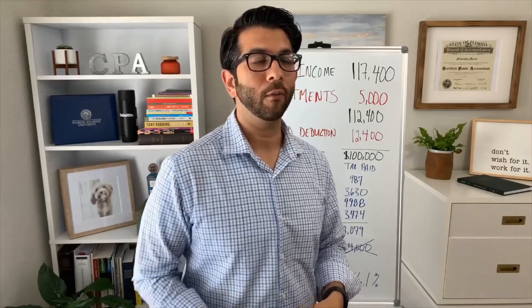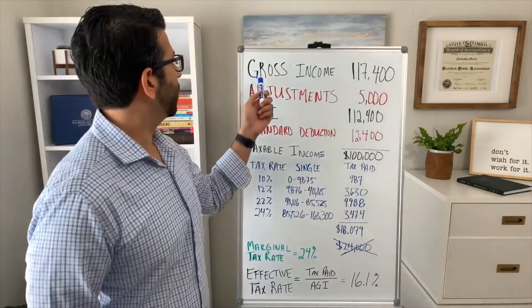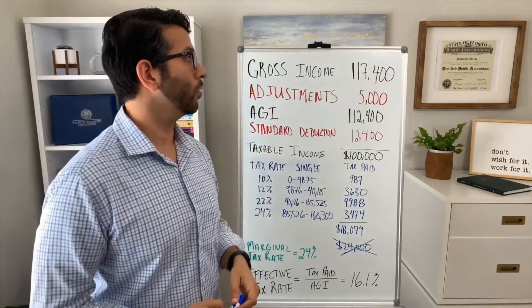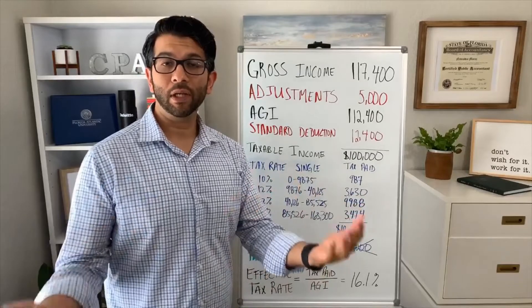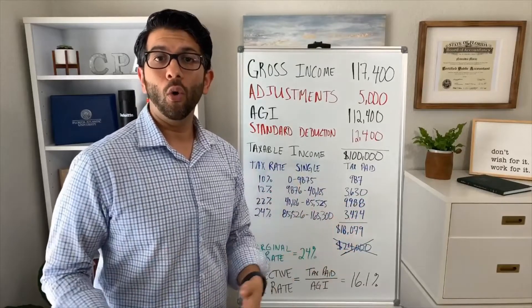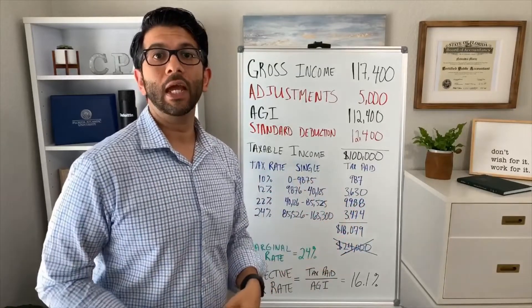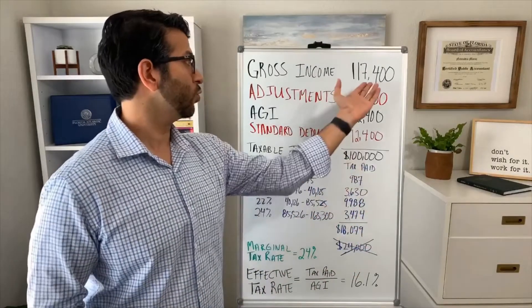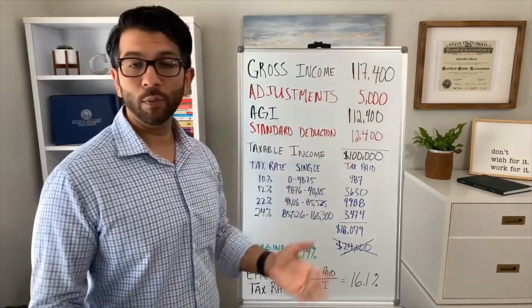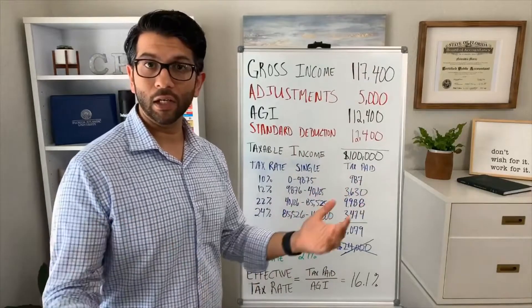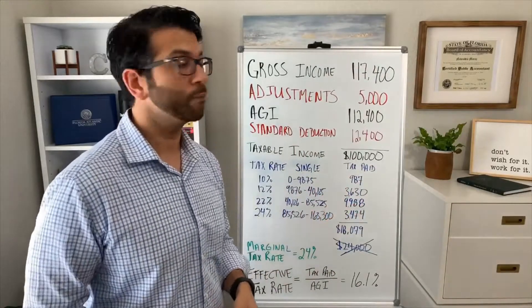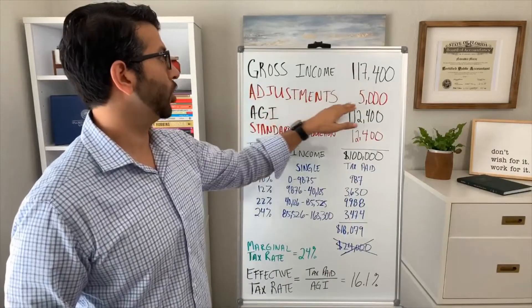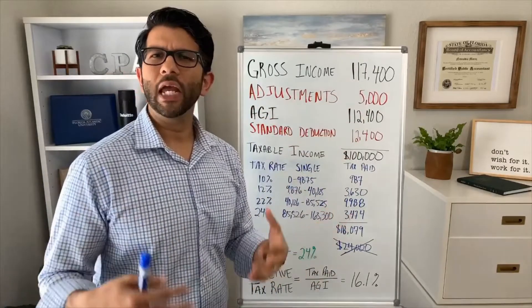In this example, this individual earned $117,400. That could be because they work for an employer, or maybe they ran a small business and after deducting their expenses this is what they arrived at. Included in this number could be things like dividend income and interest income and so on.